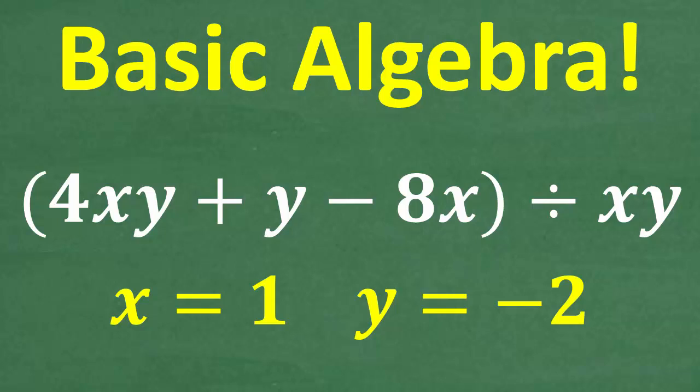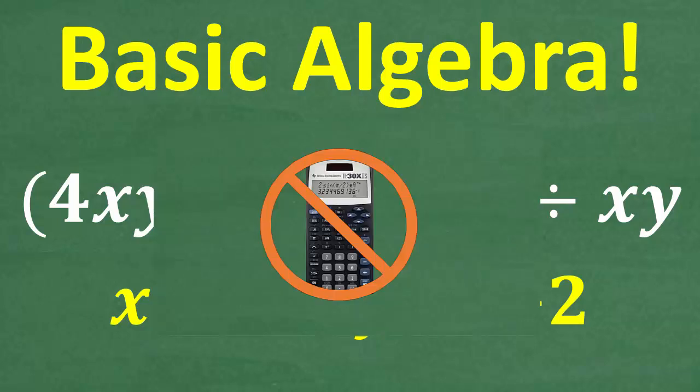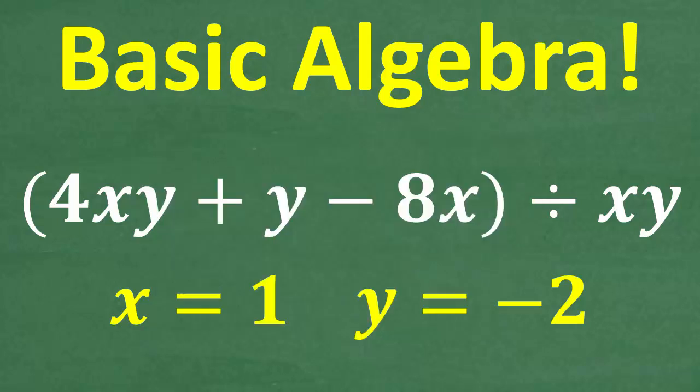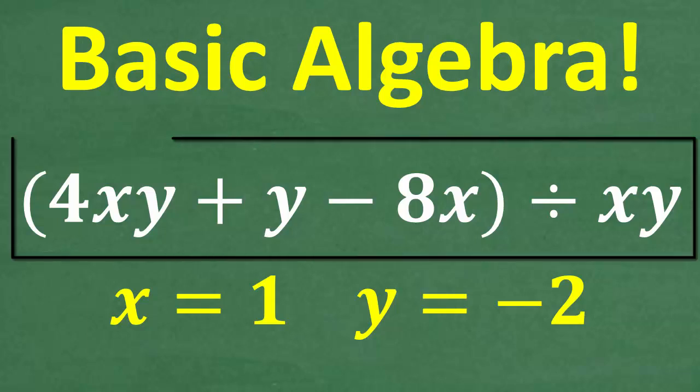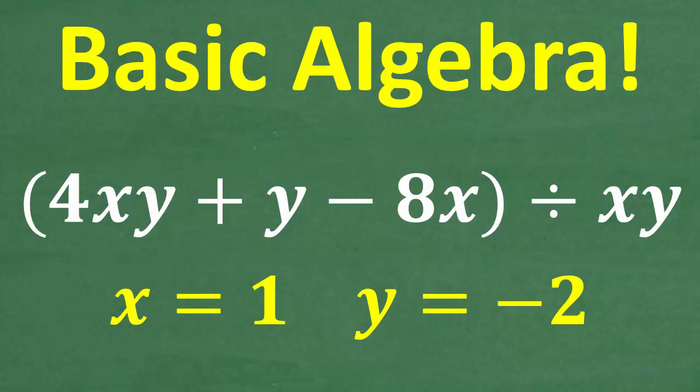Let's see how strong your basic algebra skills are by taking on this problem right here without the aid of a calculator. And what is the problem? We have this algebraic expression: parentheses 4xy plus y minus 8x in parentheses divided by xy, and we want to evaluate this for the values x equals 1 and y equals negative 2.